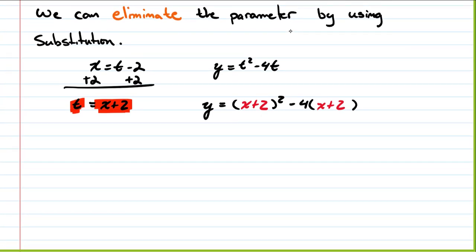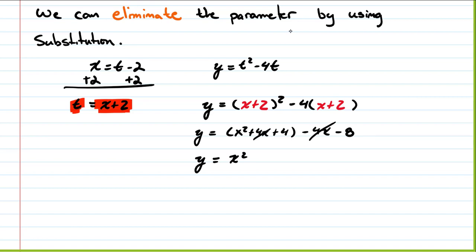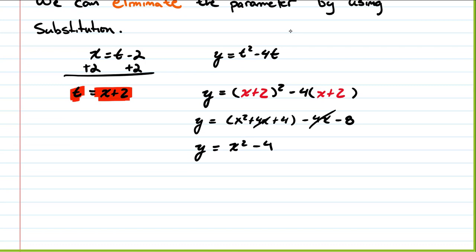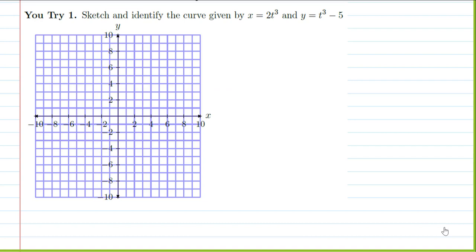If we expand and simplify: x plus 2 squared is x squared plus 4x plus 4, and distributing gives minus 4x minus 8. Collecting like terms, the 4x terms cancel and 4 minus 8 is negative 4. So we get y equals x squared minus 4, which is a standard parabola shifted down four units — which agrees with our graph.